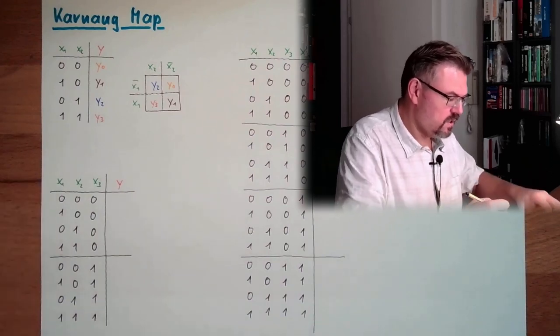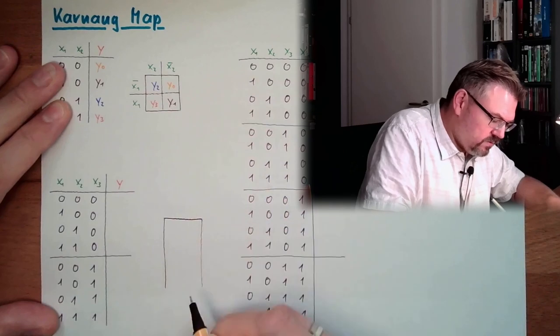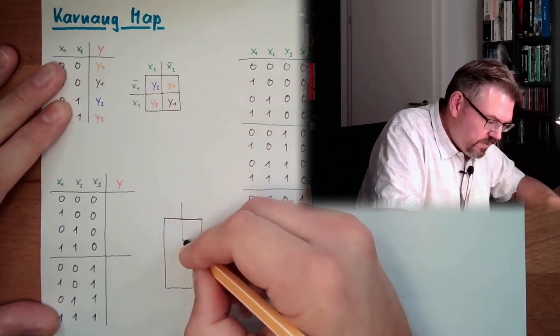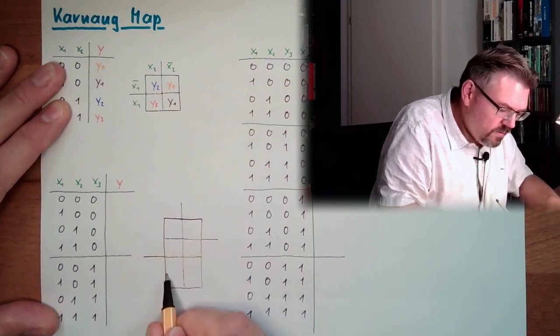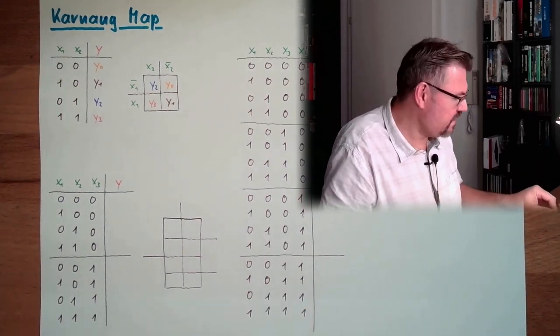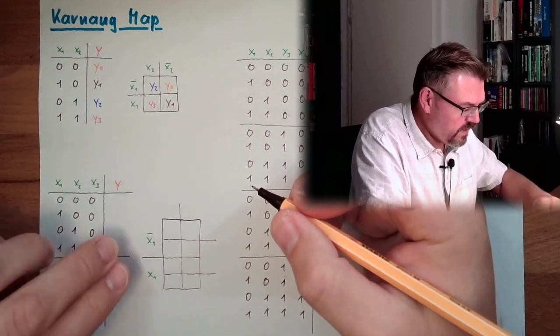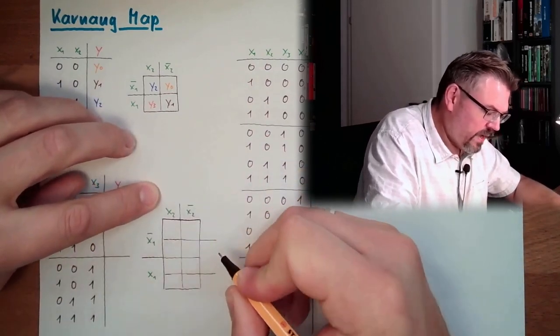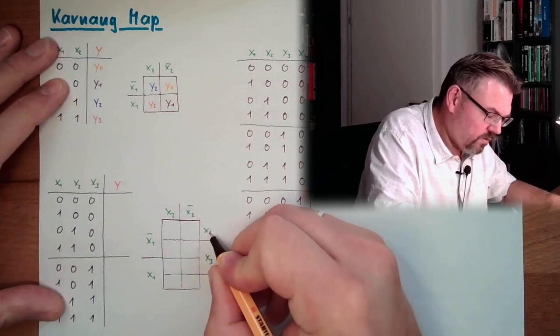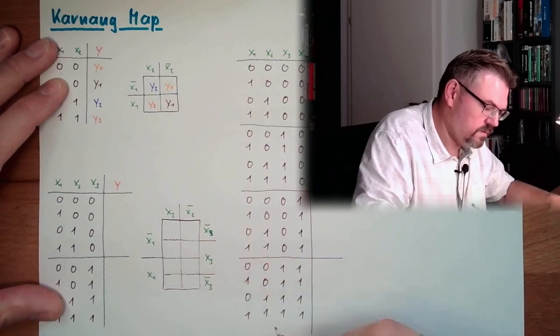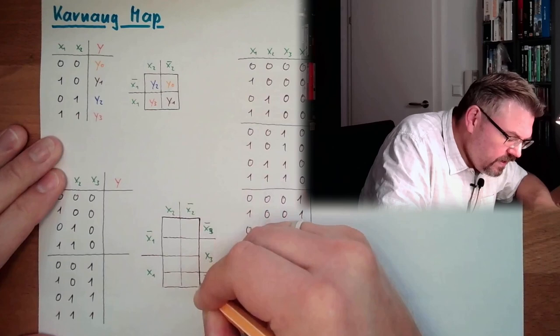How would the Karnaugh map look for three inputs? Well, we have eight lines, so we need a Karnaugh map with eight fields. Since I have only the place to do it like that, I will make two columns and four rows. Here we have now the case that we have to divide it like that. So I'm again beginning here with x1, not x1. These are these four and these four. And here we have x2 and not x2.